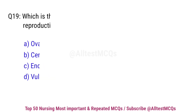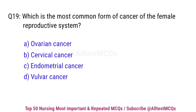Question No. 19. Which is the most common form of cancer of the female reproductive system? Right option is C. Endometrial cancer.